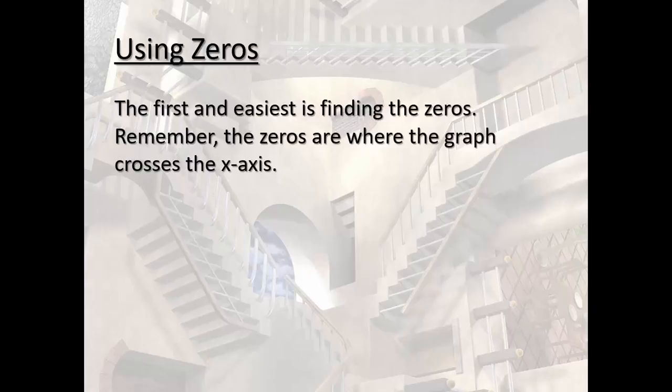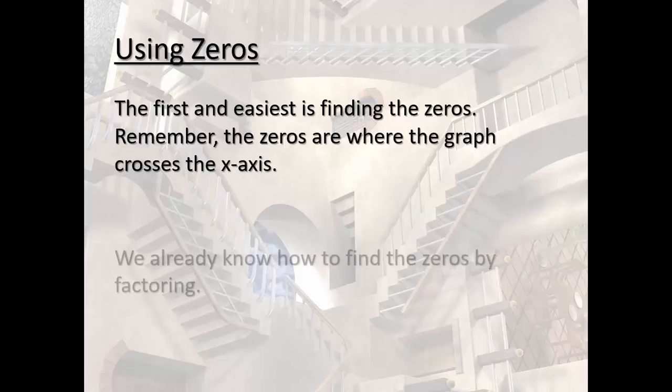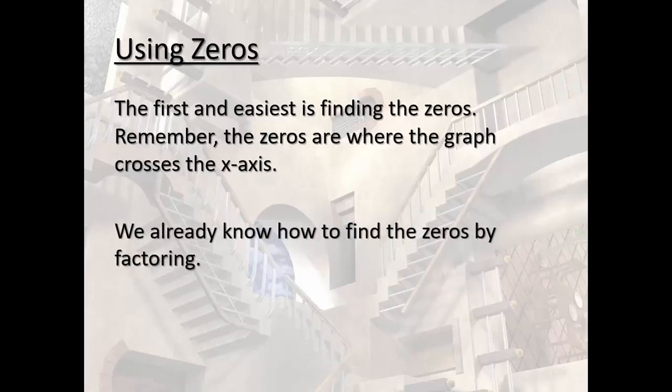Yes, the first and easiest is finding the zeros. Remember, the zeros are where the graph crosses the x-axis. And we've already figured out how to find zeros by factoring. We have learned the quadratic formula as well back in Algebra 2. But do we have any way of knowing how many zeros there are?